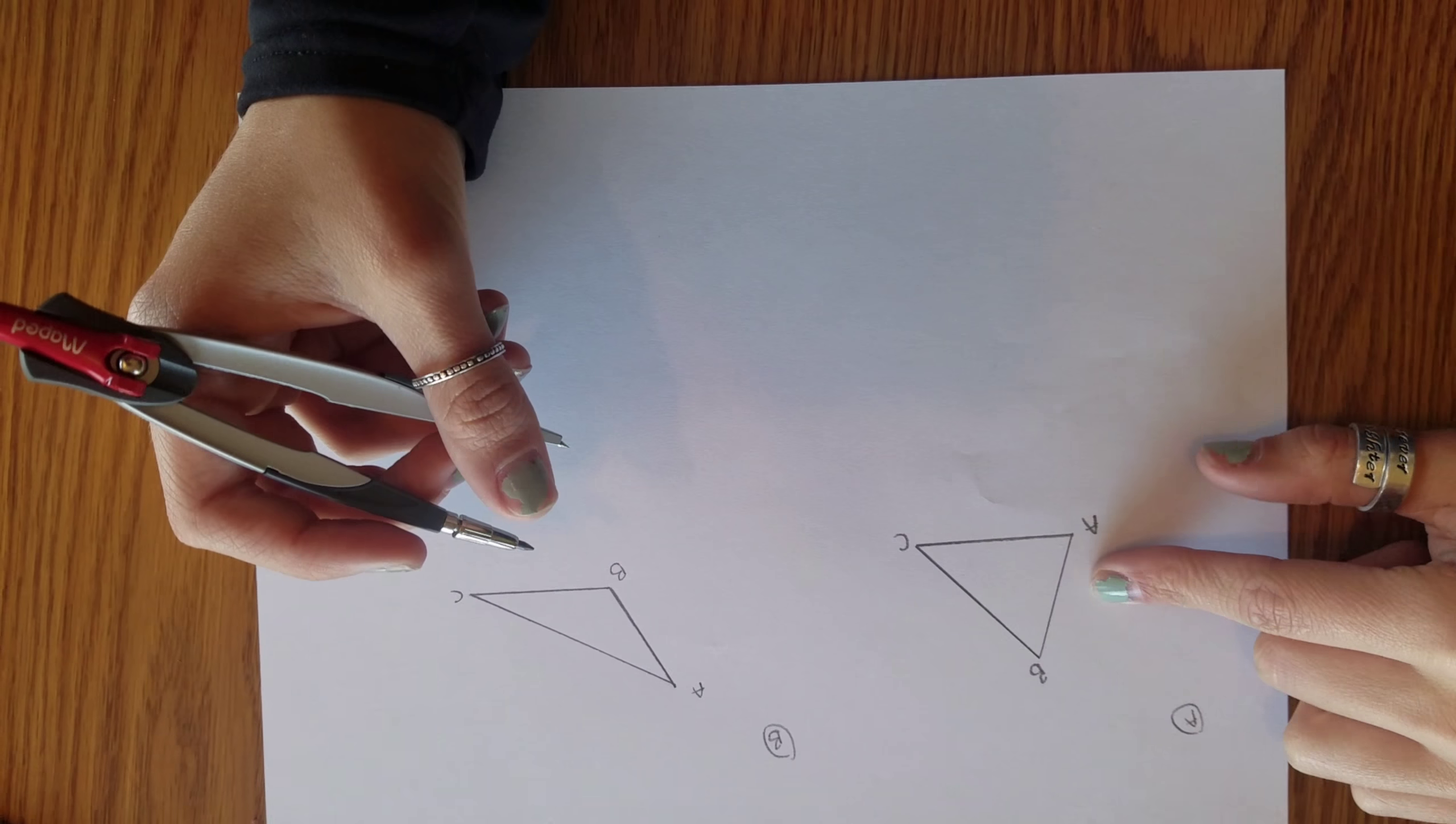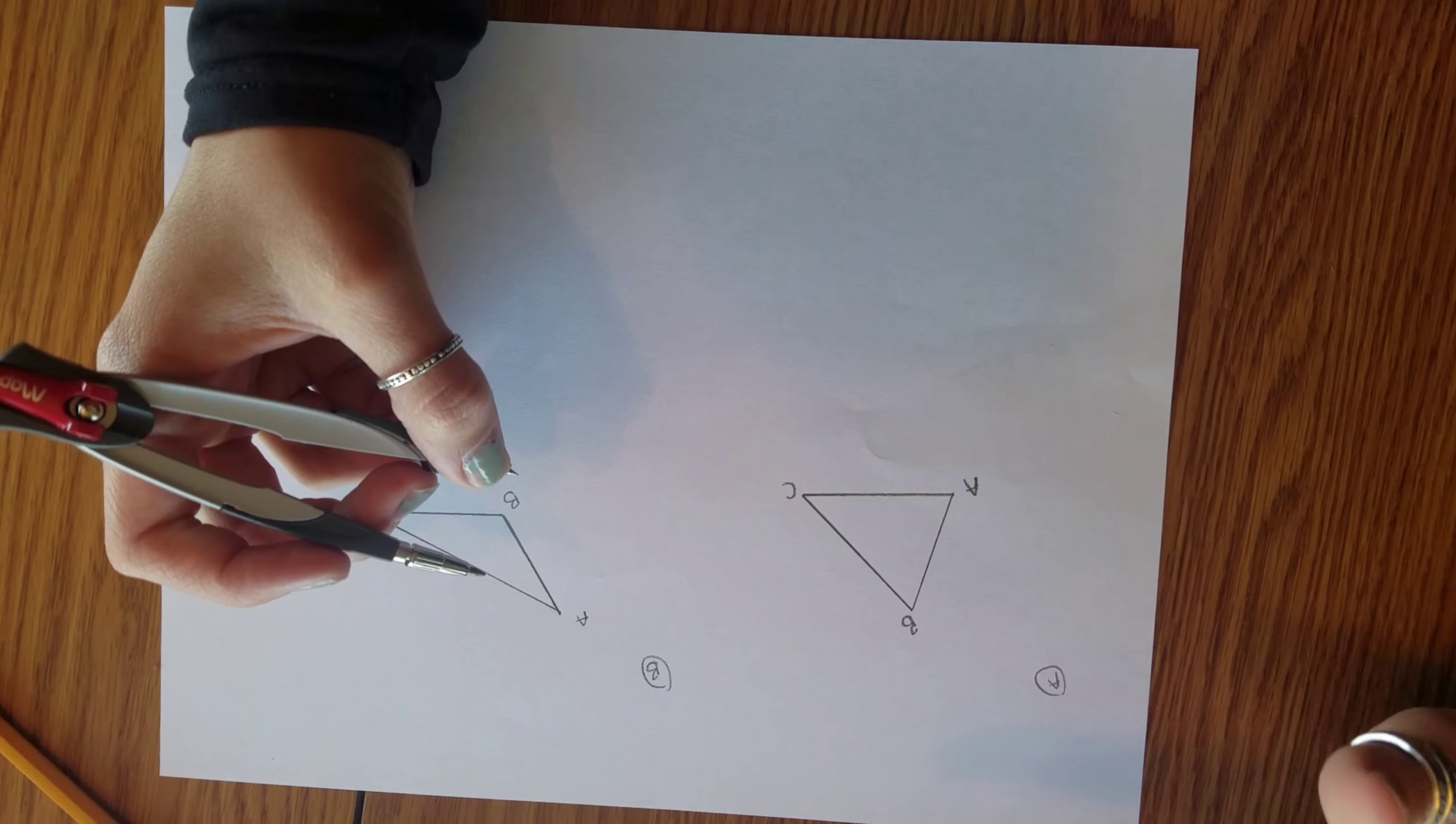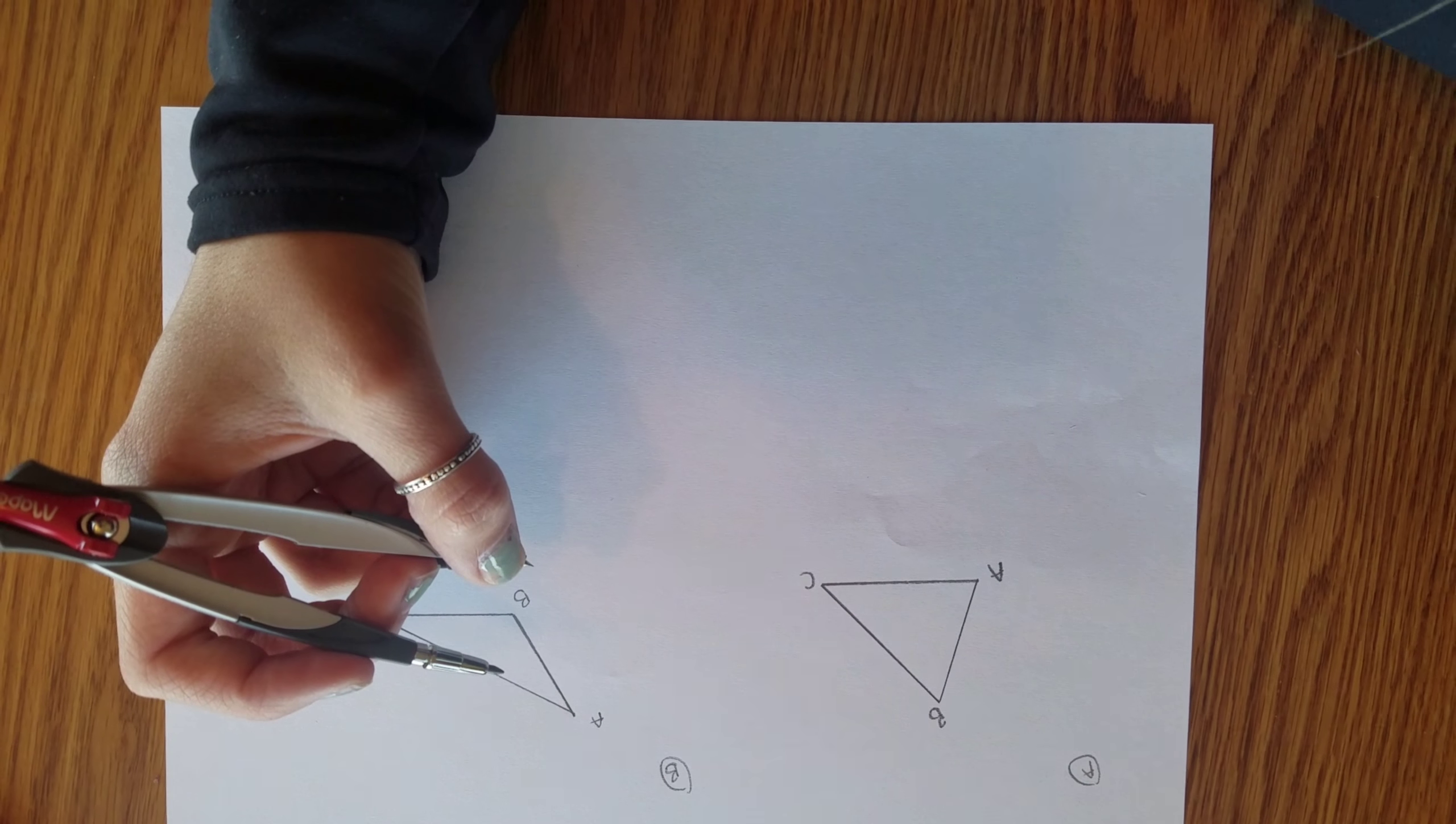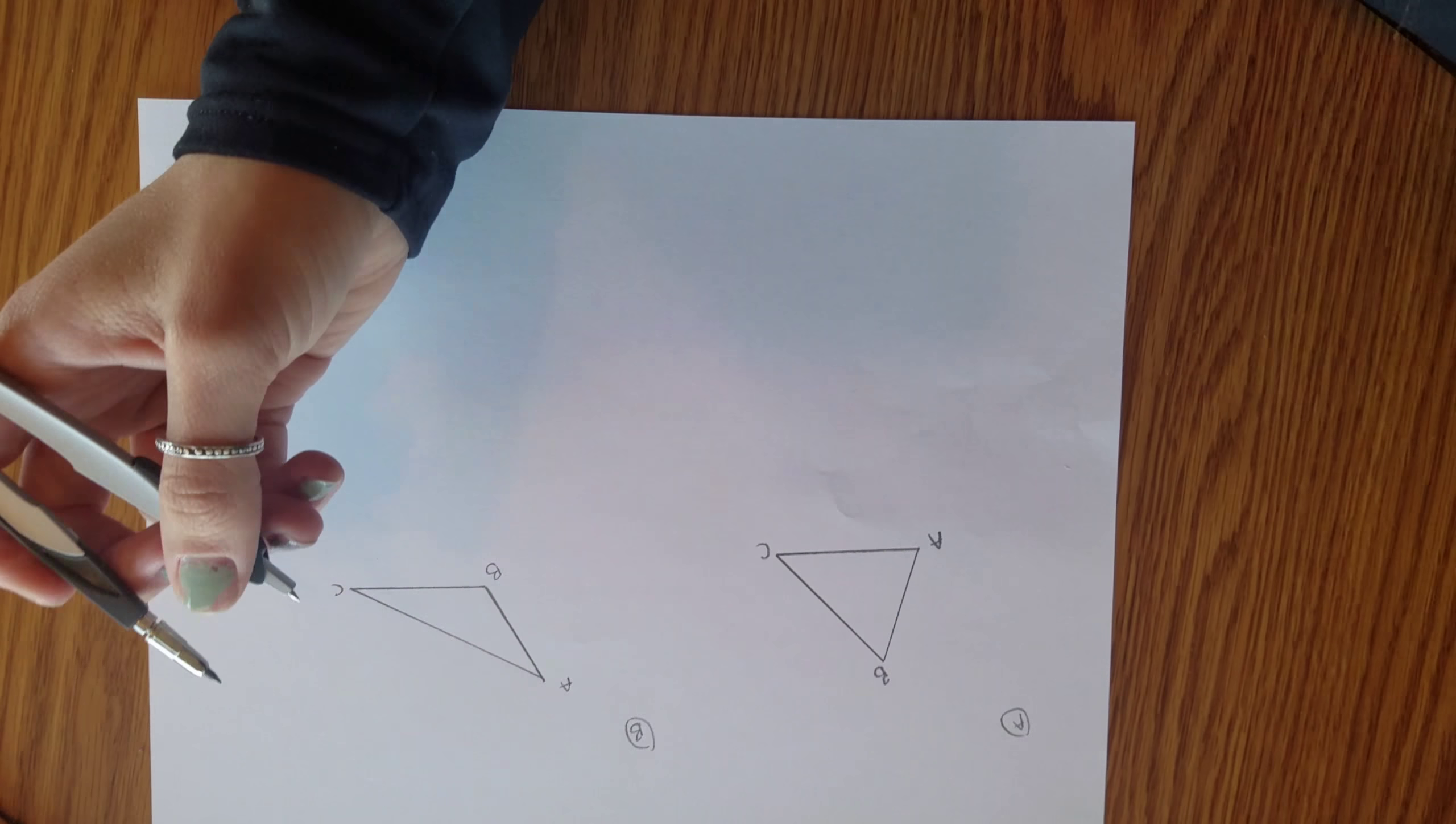So here I re-drew the triangle that you saw on the problem. We know that if we want something that is equidistant from the vertices, we need to find the circumcenter of the triangle, which can be found by circumscribing the triangle.